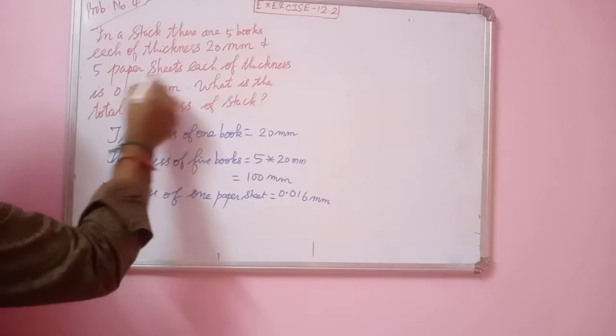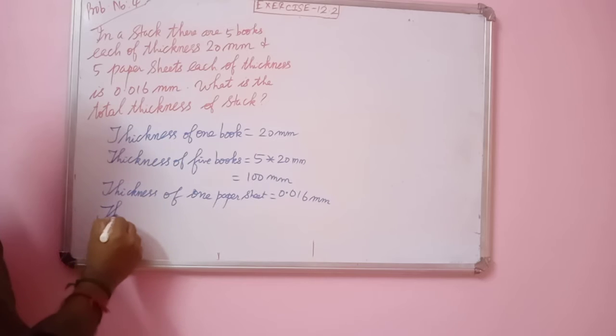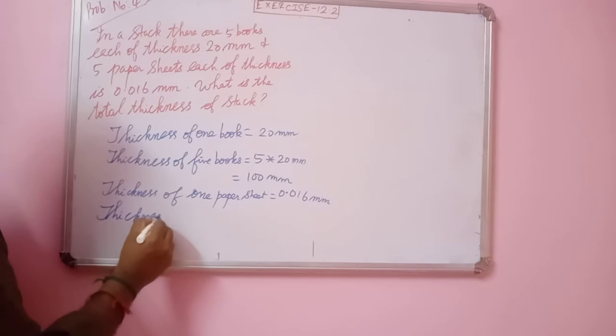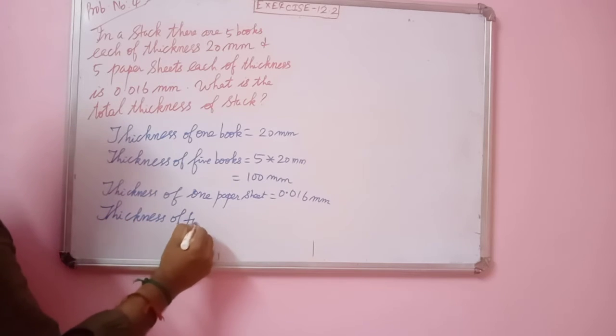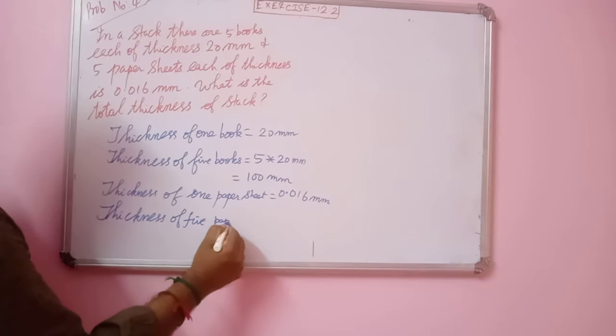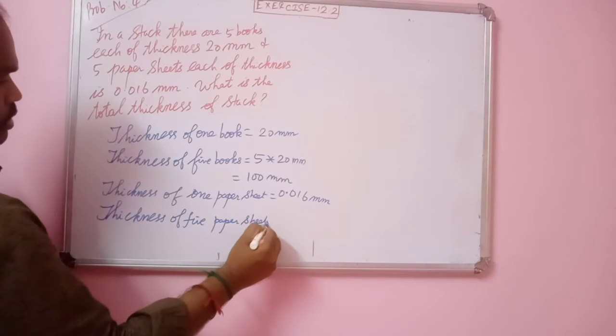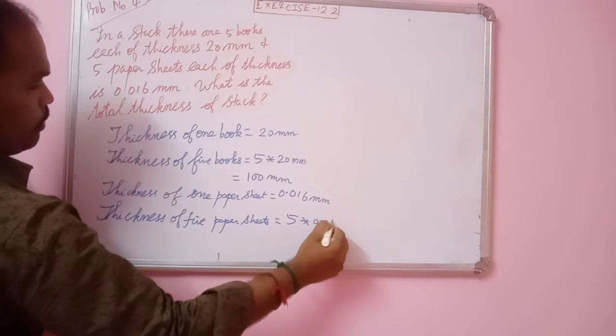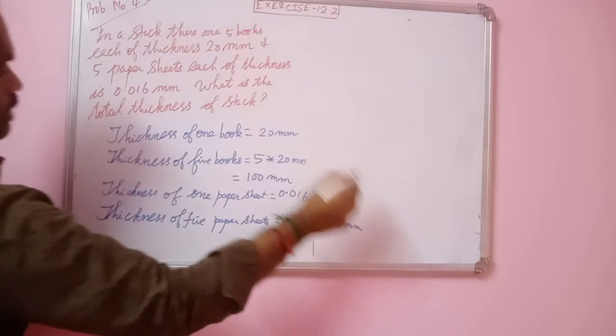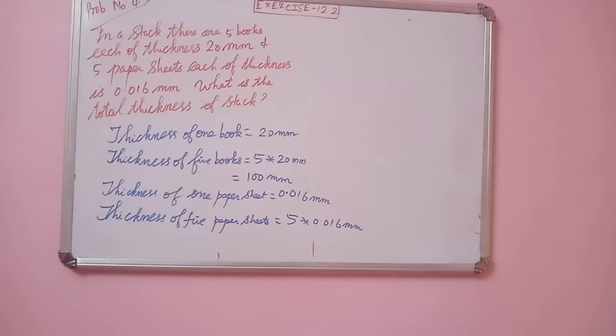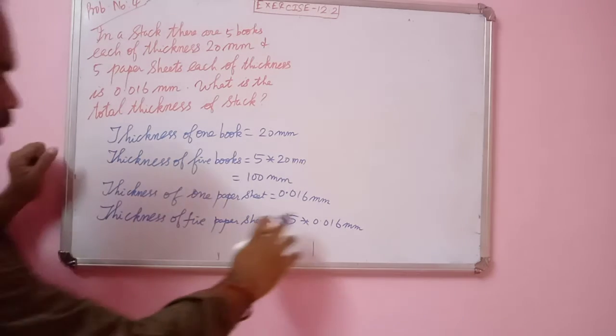So, how many sheets are given? Thickness of 5 paper sheets: 5 into 0.016 mm. So, 5 into 0.016 is how much?